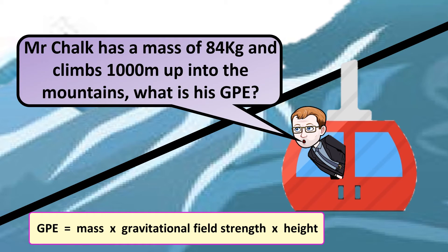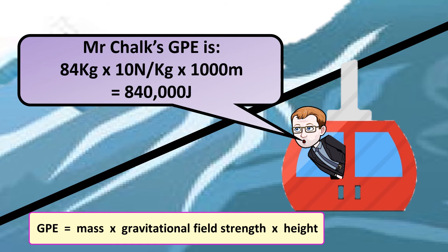If I climb 1,000 meters in a ski lift, what would be my GPE? That's going to be 84 — my mass — times 10 times 1,000, which gives 840,000 joules.